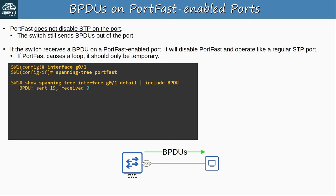Let's move on to BPDU Guard. PortFast should only be enabled on ports connected to non-switch devices like end hosts and routers — devices that don't send BPDUs. Basically if a PortFast-enabled port receives a BPDU, someone made a mistake. If an end user carelessly connects a switch to a port, it could affect the STP topology — for example, if the switch becomes the new root bridge, that will affect the entire STP topology.